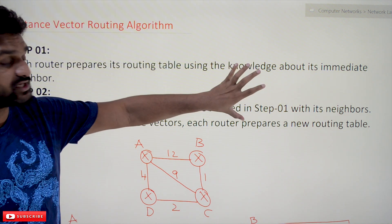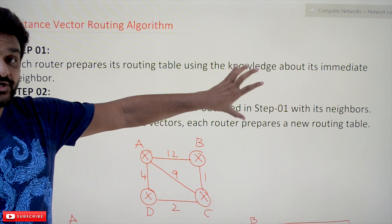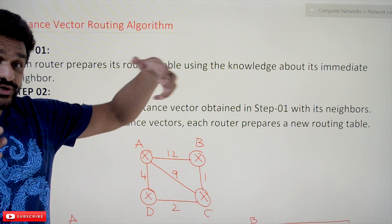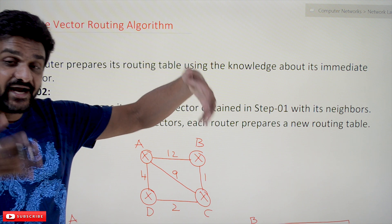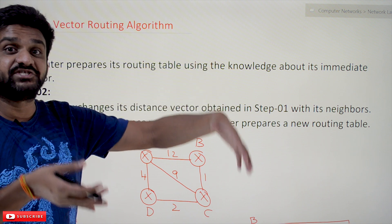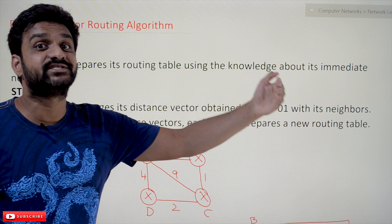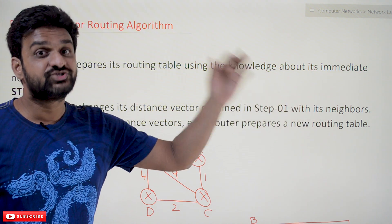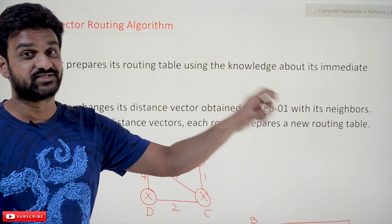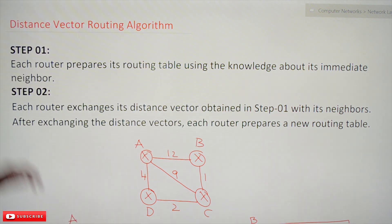Now coming to this class, we will try to understand distance vector routing — how this distance vector routing algorithm will work so that the routing tables are generated at the routers in an efficient way to get the shortest distance. Getting the shortest distance is the objective of this entire algorithm.